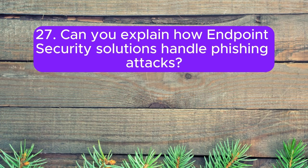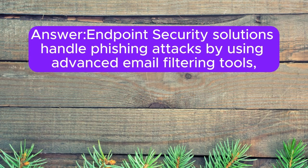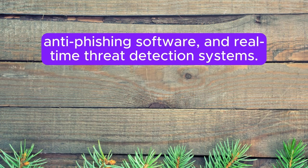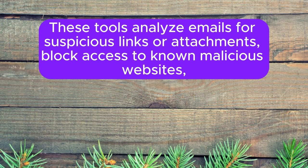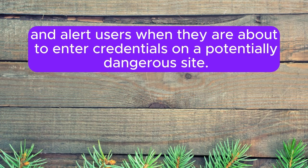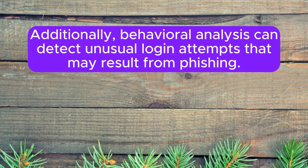Question 27: Can you explain how endpoint security solutions handle phishing attacks? Endpoint security solutions handle phishing attacks by using advanced email filtering tools, anti-phishing software, and real-time threat detection systems. These tools analyze emails for suspicious links or attachments, block access to known malicious websites, and alert users when they are about to enter credentials on a potentially dangerous site. Behavioral analysis can also detect unusual login attempts that may result from phishing.